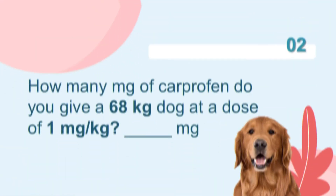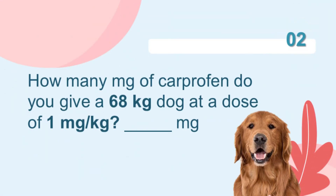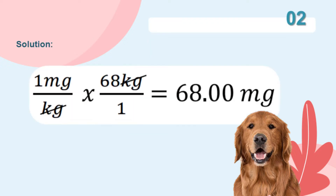For the second problem: How many milligrams of carprofen do you give a 68-kilogram dog at a dose of 1 milligram per kilogram? Solution: We multiply 1 milligram per kilogram by the weight of the dog, which is 68 kilograms. We come up with the answer: 68 milligrams.